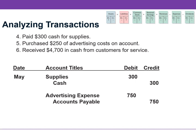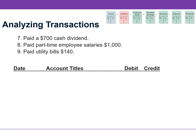For transaction number 6, we identified both cash and service revenue were increasing. Assets increase with debits and revenue increases with credits. So we would DEBIT cash and credit service revenue for $4,700. If you see the word paid, immediately think credit cash. The other part of that transaction is dividends, and dividends increase with debits. So you would DEBIT dividends and credit cash for $700.